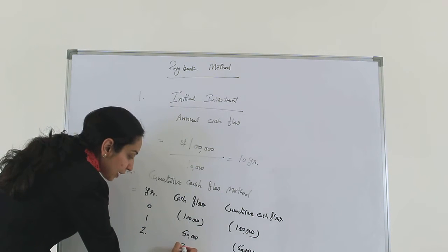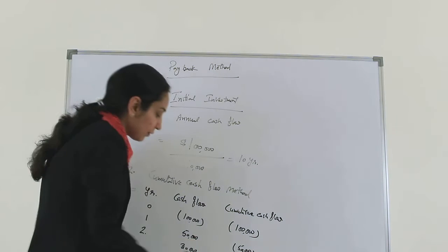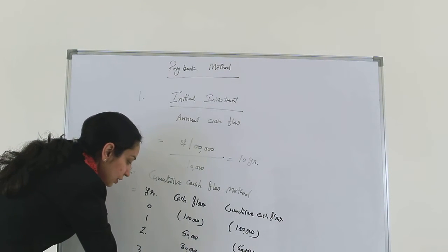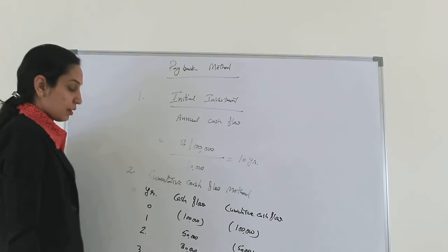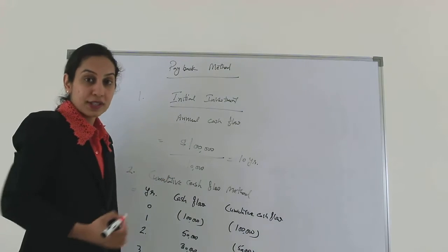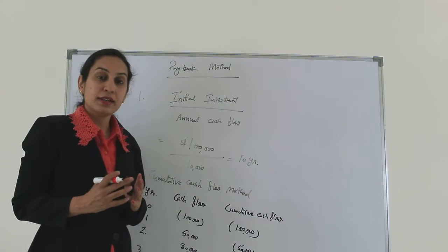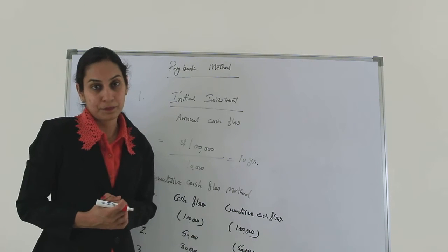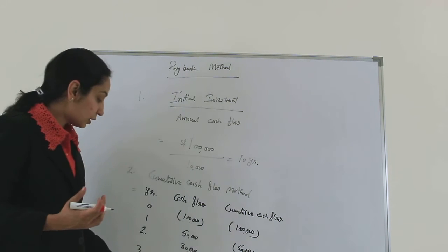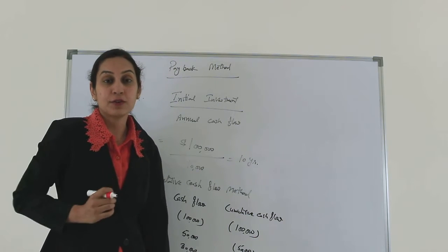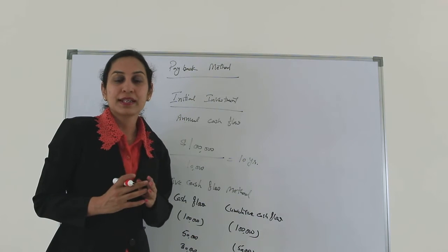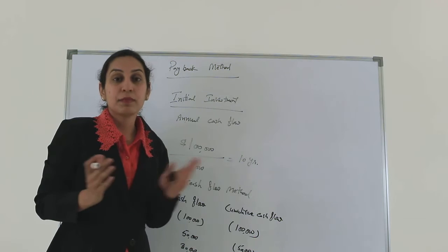In year two, we expect around $30,000 cash flow, so our cumulative cash flow will now be negative $20,000. In year three, we expect around $70,000, and that's where our cumulative cash flow goes to positive $50,000. As you can see, the money was recovered somewhere between year two and year three. In year two we had a cumulative cash flow of negative $20,000, and in year three we had a positive $50,000.